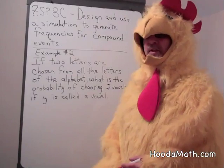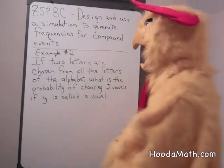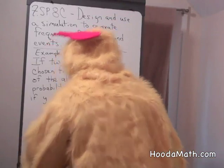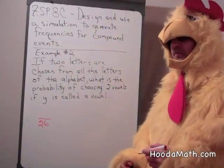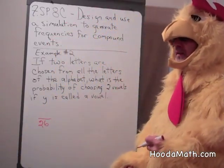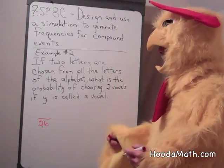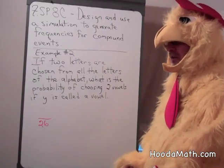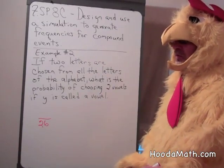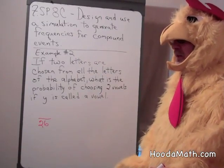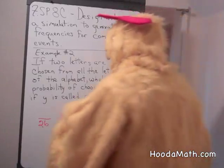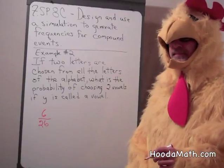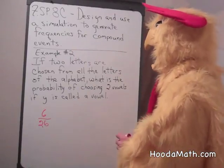So first of all, how many letters are in the alphabet? That's right, 26. So our probability for pulling one vowel — how many vowels are there? Well, A, E, I, O, and U, and sometimes Y, so we're using Y. So 6 out of 26 the first time. That's our probability for taking one vowel.